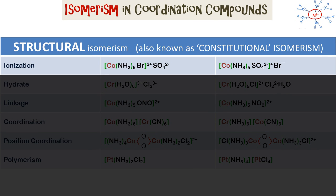In ionization type of structural isomerism, we have one coordination compound giving sulfate ion in solution and another coordination compound gives bromide ion in solution. So if we do a test of the solution with barium chloride, we will get a yellow precipitate in one case and a white precipitate in the other.